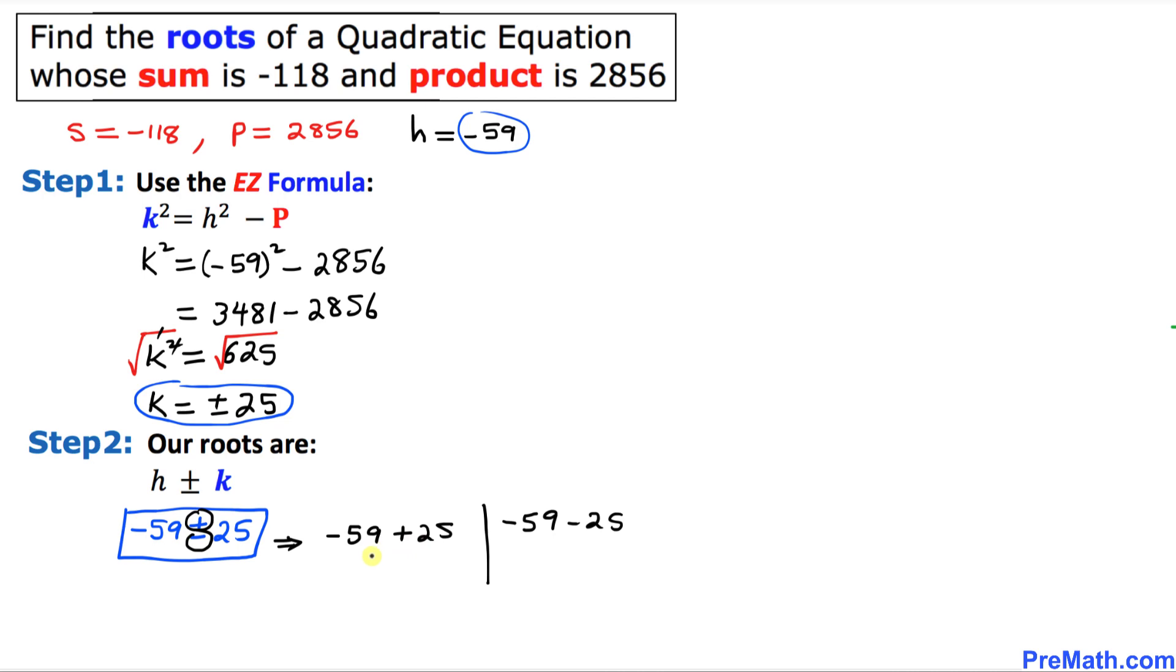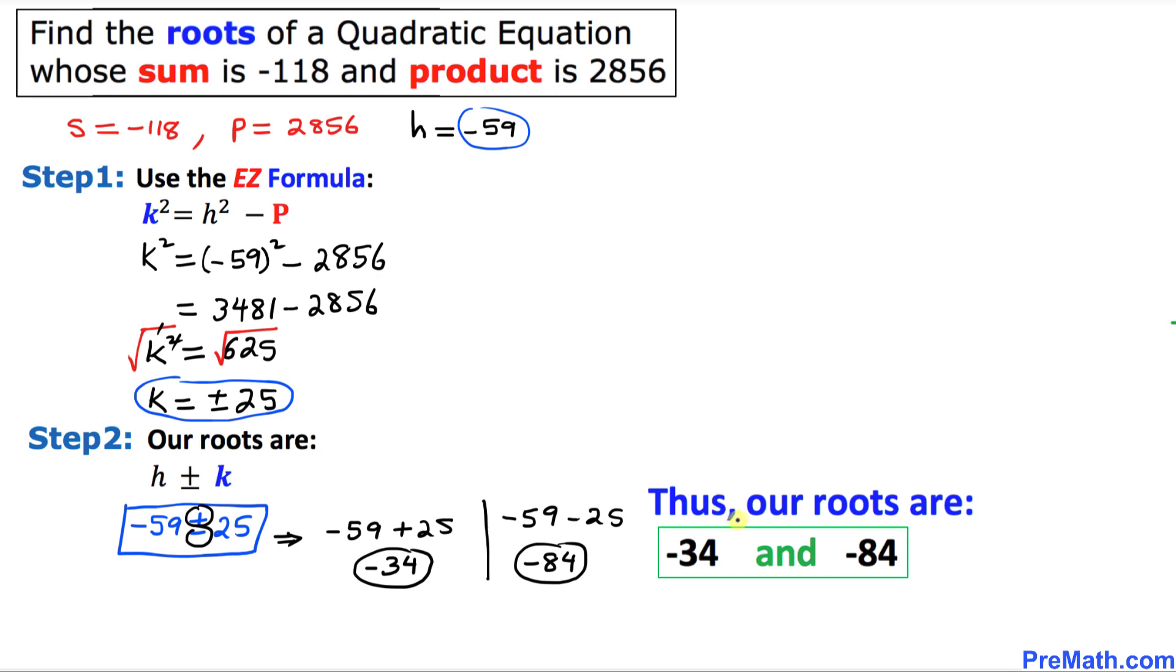So if we simplify this thing that is going to give us negative 34 as one of the solutions and the other one is going to be negative 84. So thus our roots turn out to be negative 34 and negative 84.